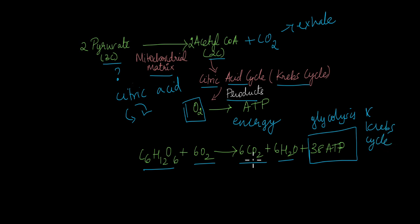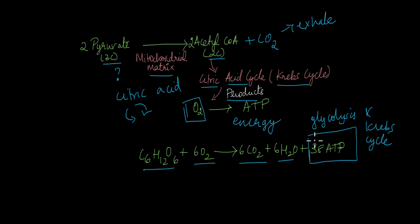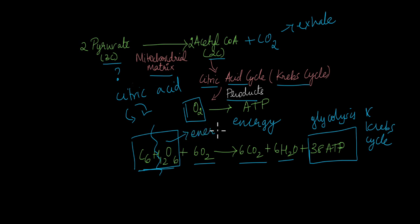Ideally, from one molecule of glucose we are able to get 38 ATP, though the actual number is slightly lower. In an ideal situation, one molecule of glucose should yield 38 molecules of ATP. Why is energy stored in the form of ATP? When glucose is broken down, why don't cells use the energy directly rather than storing it as ATP? We will answer that question in another video.